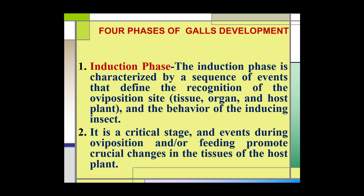Four phases of gall development. The first phase is the induction phase. This phase is characterized by a sequence of events that defines the recognition of the oviposition site — meaning the egg-laying site, which may be a tissue or organ in the host plant — and the behavior of the inducing insect. It is a critical stage, and events during oviposition and/or feeding promote crucial changes in the tissue of the host plant.